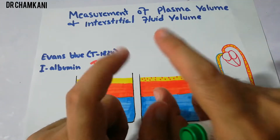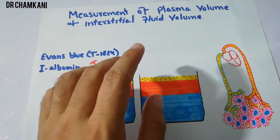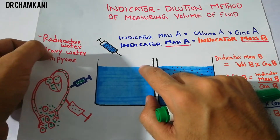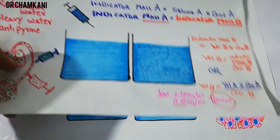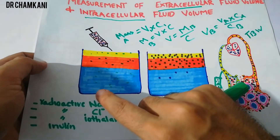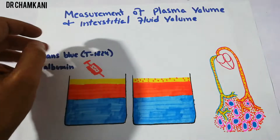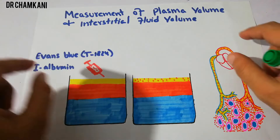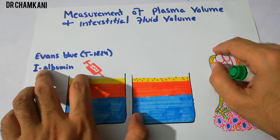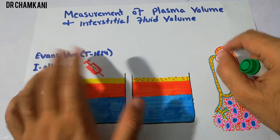This time we will again use the indicator dilution method for the measurement of plasma and interstitial fluid. For total body water, the indicator used was radioactive water, heavy water, or antipyrene. For extracellular fluid volume, we used radioactive sodium, radioactive chloride, radioactive iothalamate, or inulin. For plasma volume, we are going to use radioactive iodine-labeled albumin or Evans blue.